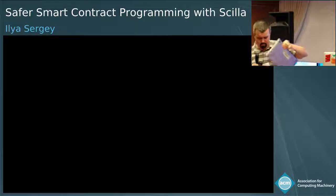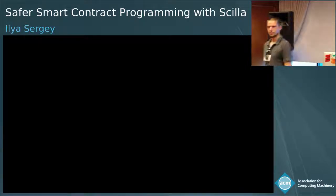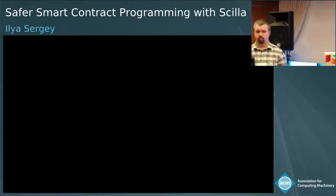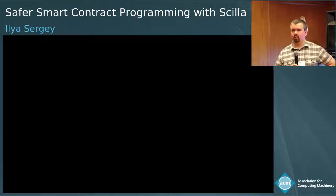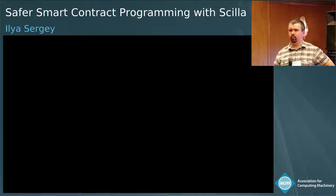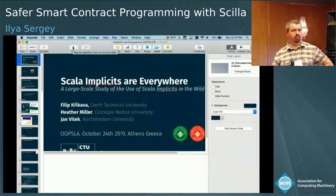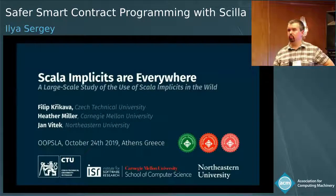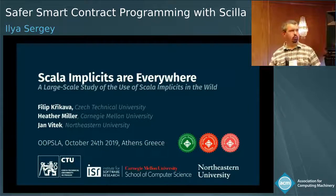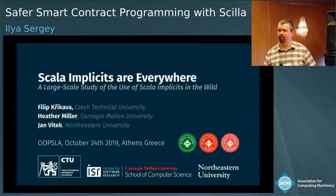Question: You have structural recursion — has that been a problem to express programs, and do you ever need to go back to well-founded recursion? Answer: The only problematic cases where structural recursion doesn't cut it are efficient implementations of divide-and-conquer algorithms — for example, it's pretty difficult to implement quicksort with only structural recursion. We did not experience that many such use cases. For now we thought it fine to have something where we can reason about termination automatically. If it becomes an issue, we can think about integrating custom termination measures into the language.